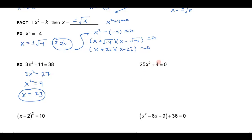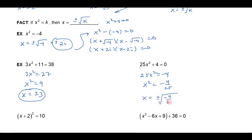Likewise, I could take the 4 over to the other side, divide both sides by 25, then use the square root property — extract the square roots — and I would get x equals plus or minus the square root of negative 4/25, which is plus or minus 2/5 i. Remember, the square root of a negative gives you an i.